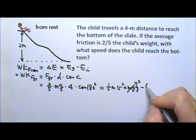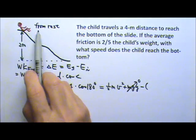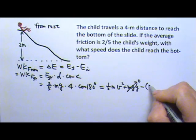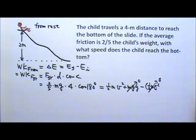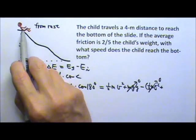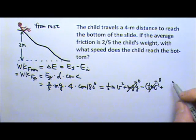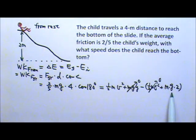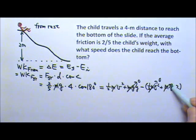Minus the initial mechanical energy. For the initial mechanical energy, the child starts from rest, so there is no 1 half mv squared. This is 0. The child is up high. If I use the ground here, that means the child is 2 meters above the ground. So its mgy is 2 meters. Now every leftover term has m, so the mass cancels.